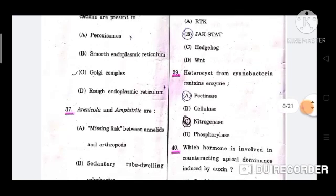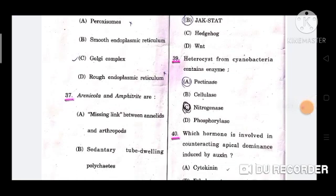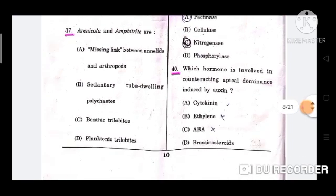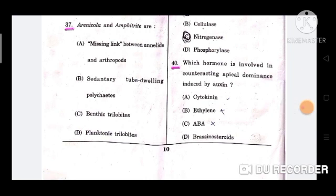Question number 39: Heterocyst from cyanobacteria contains enzyme? Correct option is C, nitrogenase. Next question, question number 40: Which hormone is involved in counteracting apical dominance induced by auxin? The correct answer is option A, cytokinin.